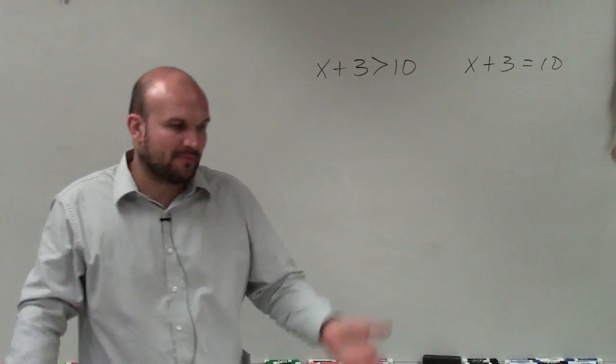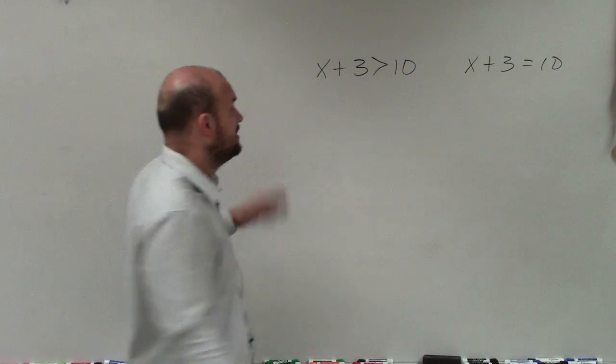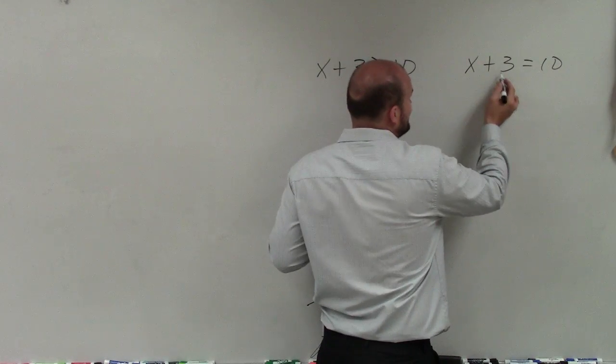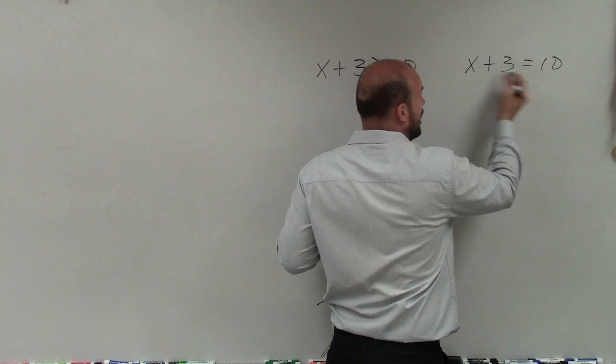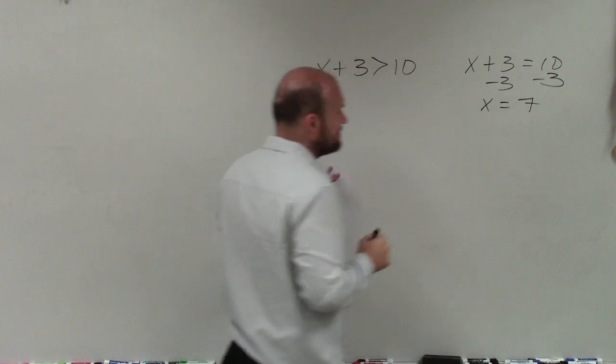When we're solving equations, remember we look at our variable and say, all right, we need to undo the operations that are happening to our variable. So here you can see that 3 is being added to my x. So to undo addition by 3, I'll subtract 3 on both sides. So I can say x is equal to 7.